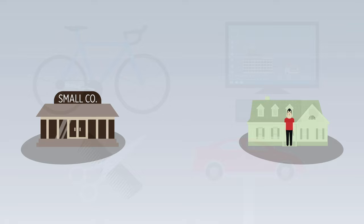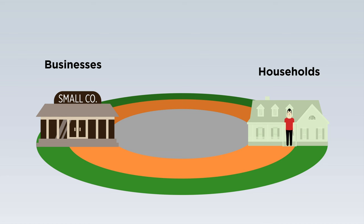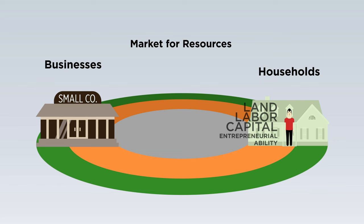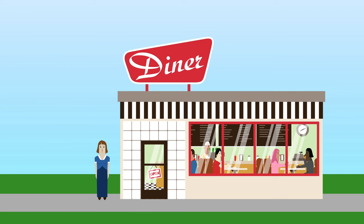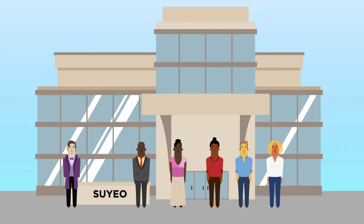Households and businesses are not isolated — they interact in markets. At the top of the model, we have the market for resources, where households sell and businesses buy economic resources: land, labor, capital, and entrepreneurial ability. Notice that it is households who own all the economic resources. You might think of capital — say, a delivery truck — as being owned by a business, but who owns the business? Households. Whether a small diner owned by an individual, a partnership owned by several individuals, or a corporation owned by stockholders, all of these businesses are owned by people who are also members of a household.